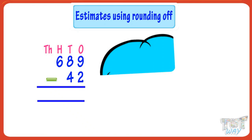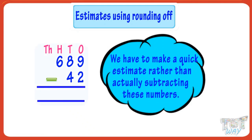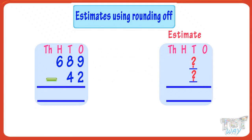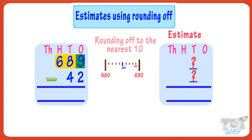Now let's take another example. We have to subtract 42 from 689. We have to make a quick estimate rather than actually subtracting these numbers. Let's round off these numbers to the nearest ten. For rounding off to the nearest ten, we look at the ones digit: if it's less than five we round down to the previous ten, and if it's five or above we round up to the next ten.